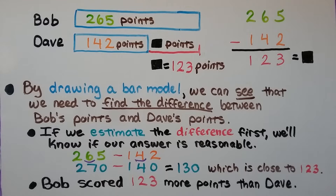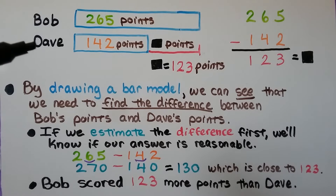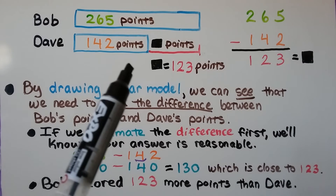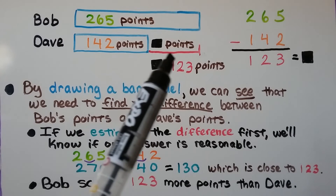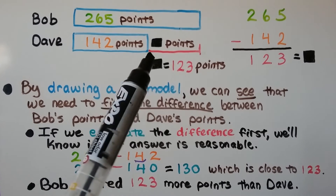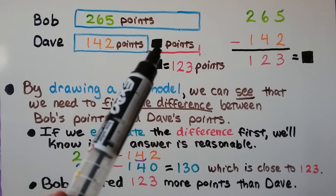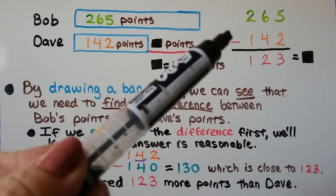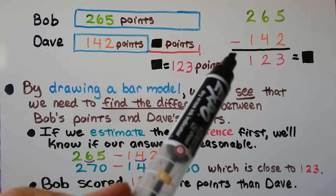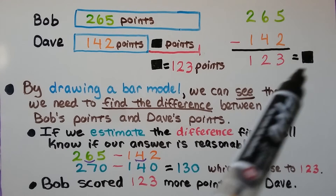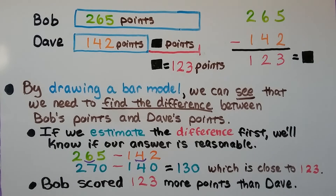Because our operation is subtraction, we're going to draw two bars: one for Bob and his 265 points, and one for Dave and his 142 points. At the end of Dave's bar, we're going to draw a line to show the difference between the two of them — that's going to be black square points. We do our subtraction: 265 minus 142. We get 123, which is equal to that black square. By drawing a bar model, we can see that we need to find the difference between Bob's points and Dave's points.